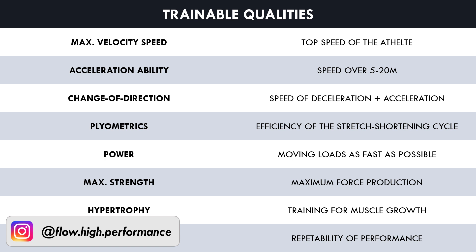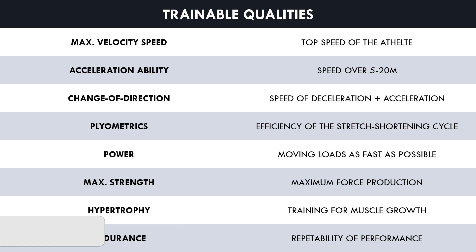Not all athletes will benefit from training all of these qualities, so only the qualities relevant to the athlete's sport should be implemented. For example, speed and change of direction training is not relevant for swimmers. It should also be understood that some of these qualities will be trained indirectly through the athlete's sport practice and may not need to be trained during strength and conditioning sessions. For example, athletes playing a court or field sport will perform hundreds of changes of direction during a week of sport practice and receive a specific endurance training stimulus with every practice session. Therefore, these qualities probably don't need to be trained additionally during strength and conditioning sessions.